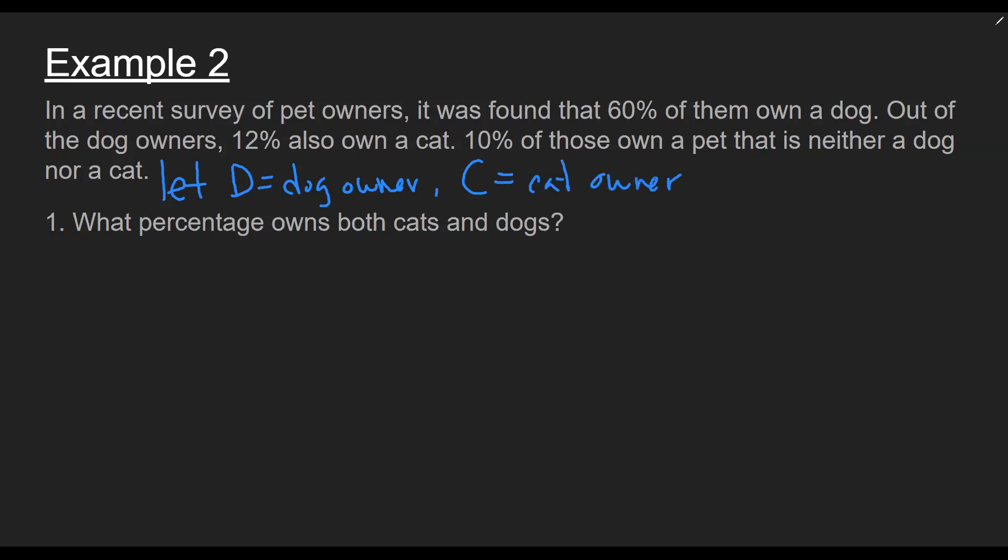And C to represent cat owner. Now what I want to do is I want to take these given piece of information right here, the 60%, the 12%, this 10%, and actually try to make sense of them using the events that we've labeled. So the first one's straightforward, 60% of them own a dog. So now I can just rewrite that. Let's label it here as the given information that the probability that we have a dog owner is 0.6.